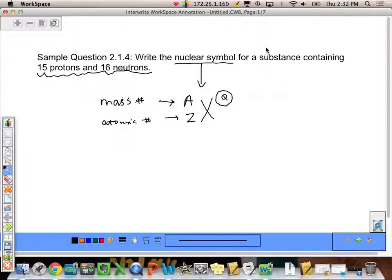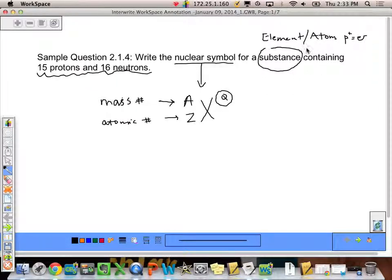It doesn't tell us if it's anything with a charge, it just says some substance. If we said element or atom, then we would know that the protons are equal to the electrons. If it said ion or cation or anion, we would know that the protons are not equal to the electrons. But since it's just saying substance, and it doesn't give us any information about electrons, we're going to assume that this Q is nothing, that there's no charge. So really, we're going to write it out A, Z, X.